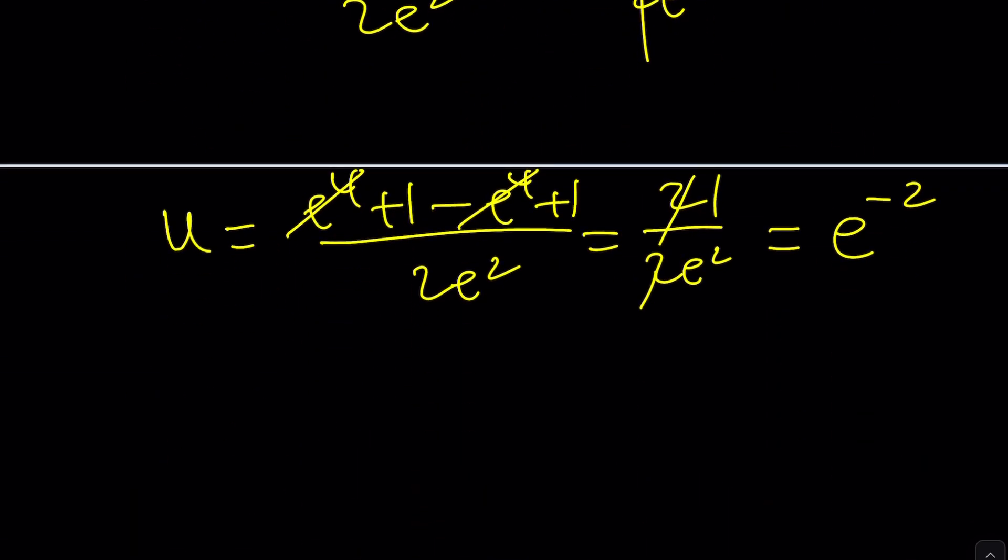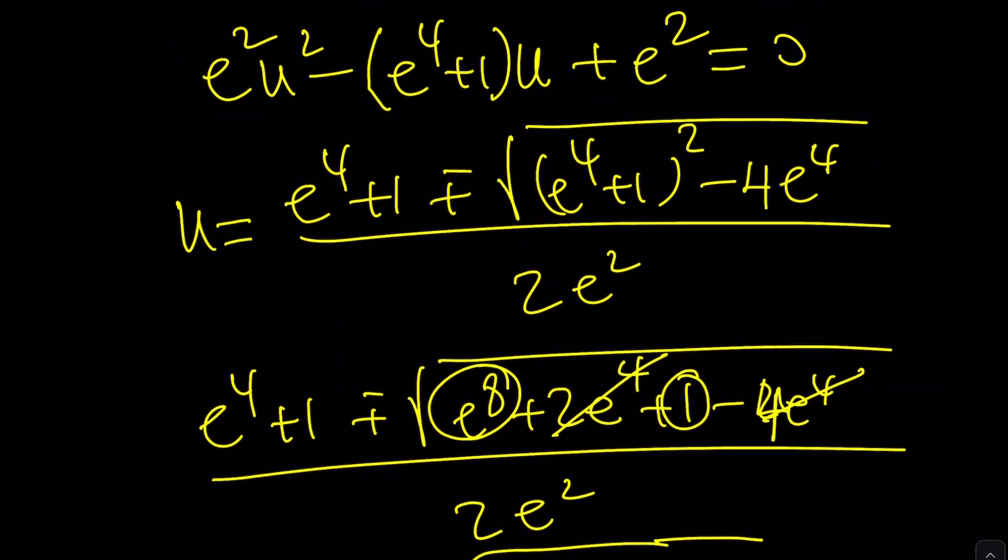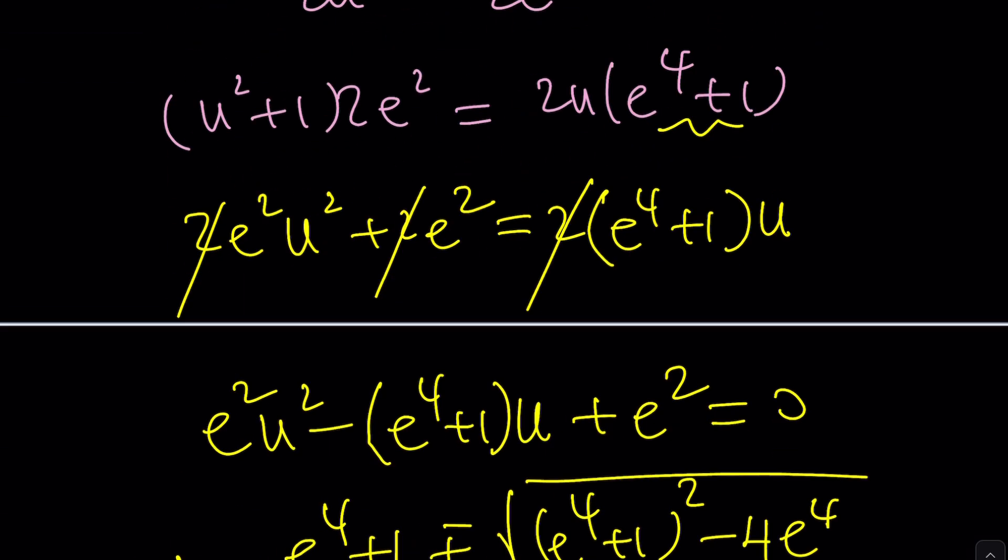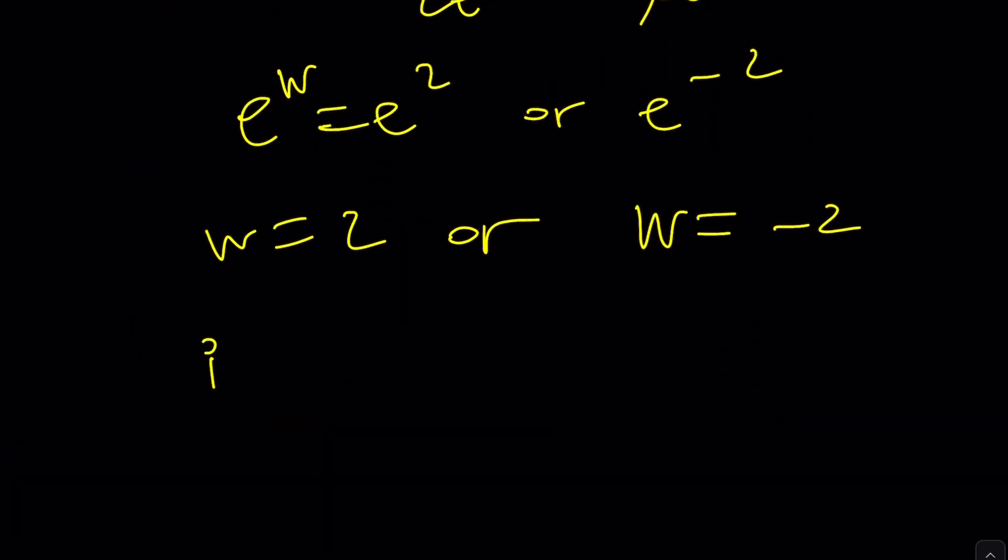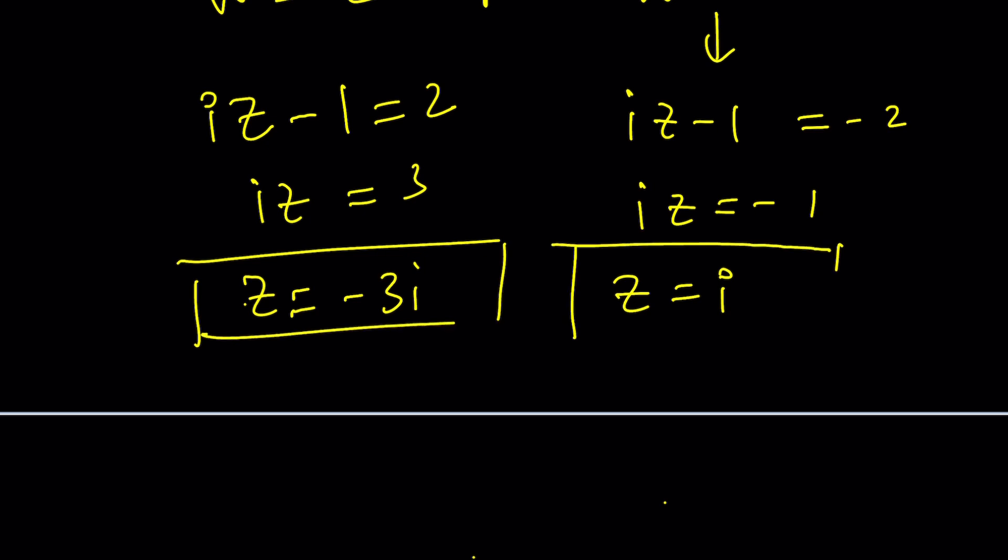So e to the power w can be e squared or e to the negative 2 which means w is either 2 or negative 2. This is helpful. And now what is w? Let's go back and back substitute one more time. w is iz minus 1. So if it's equal to 2 then we get iz equals 3. z equals 3 over i. And if you multiply the top and the bottom by i you're going to get negative 3i. And this one is going to give you something interesting. Iz minus 1 is equal to negative 2. It's going to give you iz equals negative 1. And z is going to be negative 1 over i which is i. So there are two solutions. One of them is negative 3i. The other one is i.